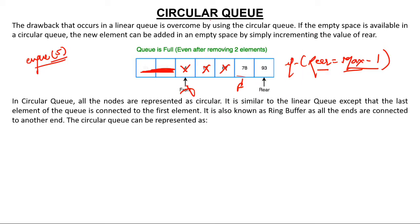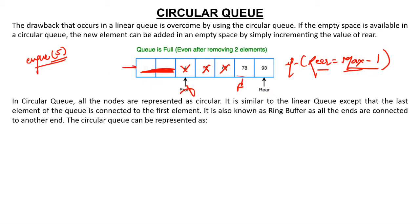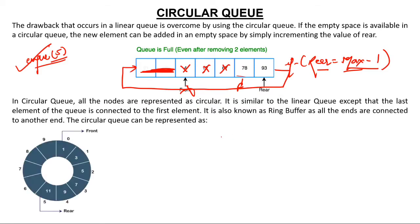In a circular queue, if empty space is available, a new element can be added in that empty space by simply incrementing the value of rear. In a linear queue, even if there is empty space, you cannot enter. But in a circular queue, the last node is connected to the first node — that's what makes it circular. So when rear is at the last position and front elements are available, rear will wrap around to the beginning.